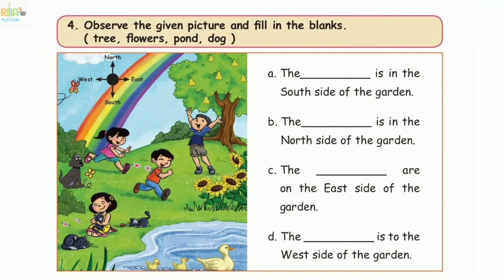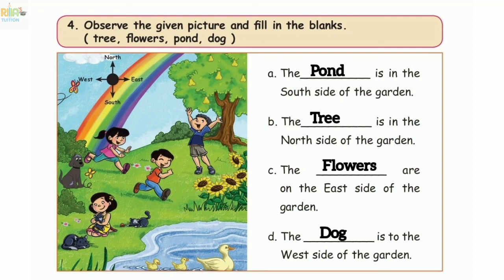Section 4: Observe the given picture and fill in the blanks. The pond is in the south side of the garden. The tree is in the north side of the garden. The dog is to the west side of the garden.